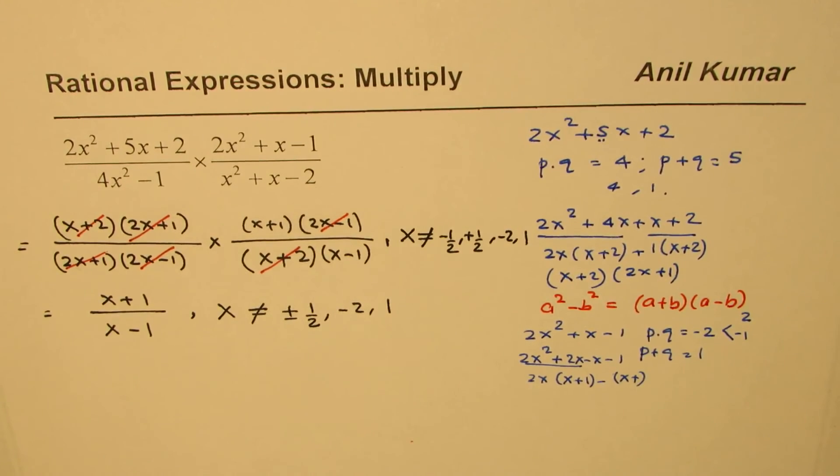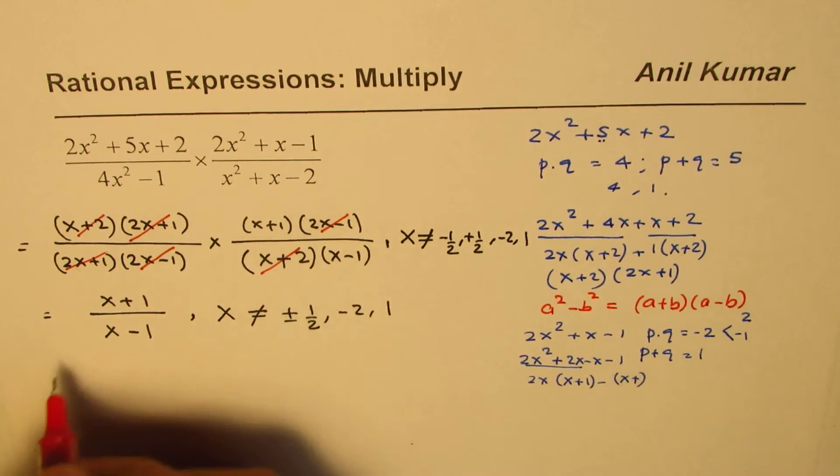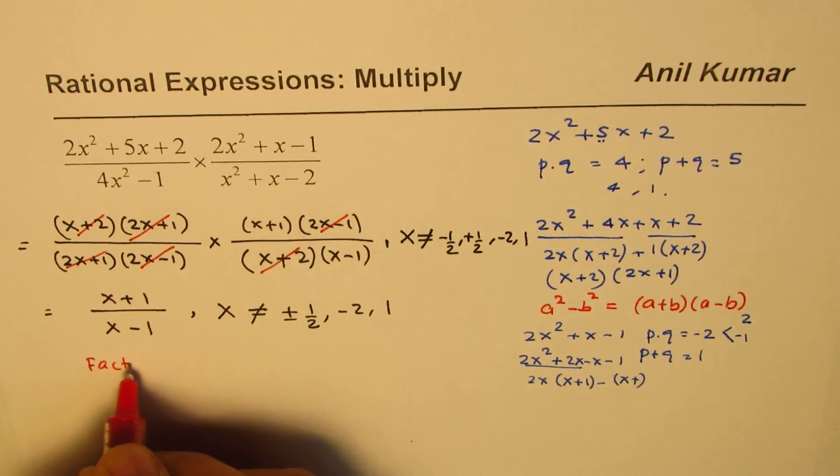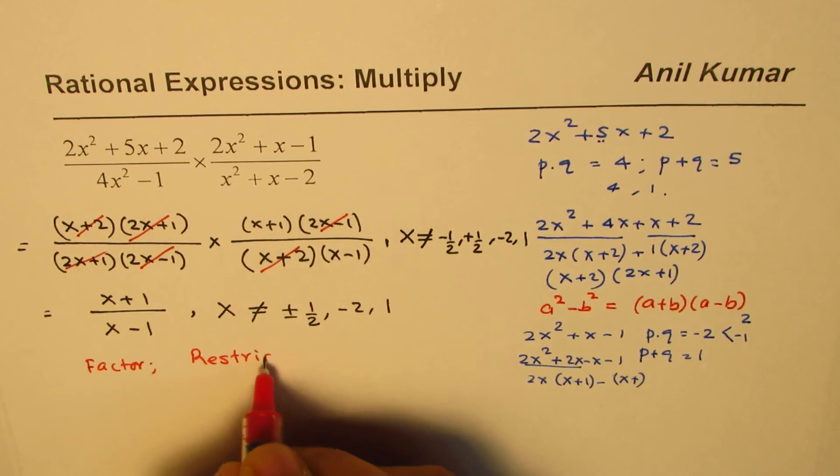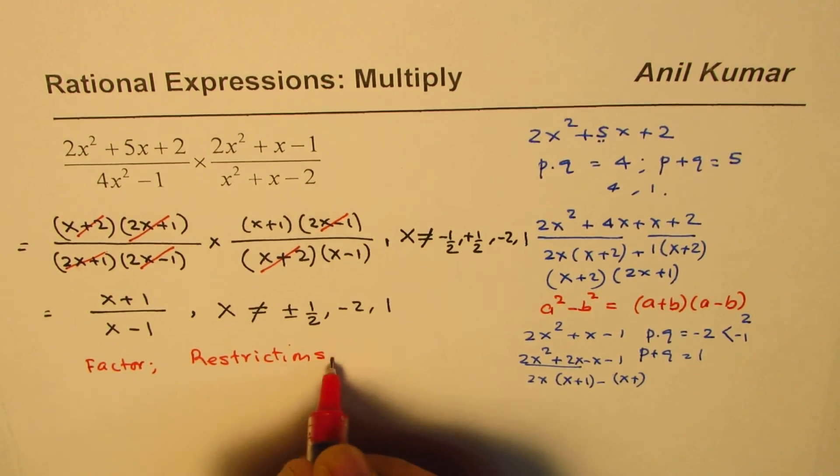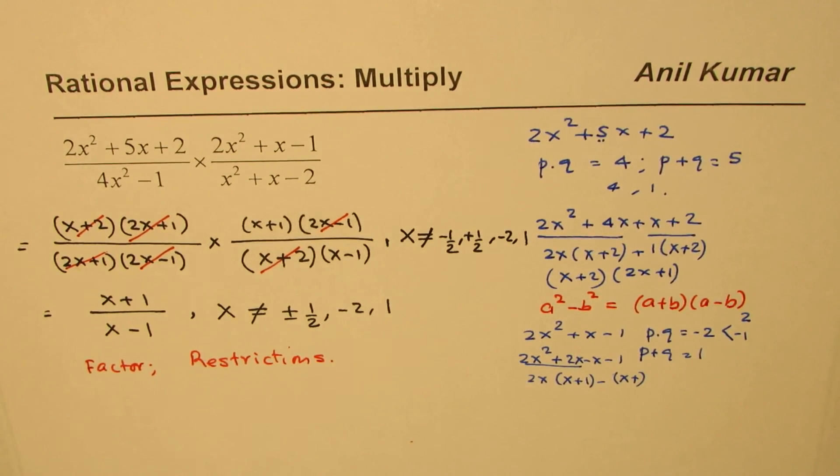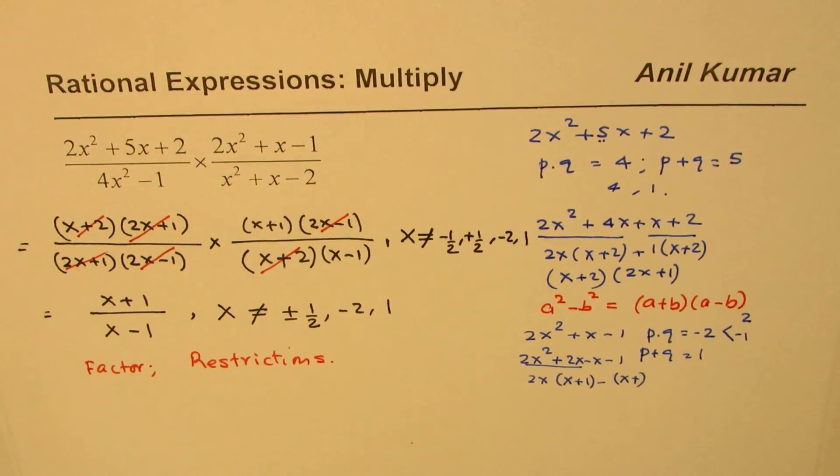So, it has four restrictions. I'm Anil Kumar, and I hope these steps help you to understand how to multiply rational expressions. So, basically, what you need to remember is, first factor, and then restrict. So, that means include restrictions in your solution. I hope that should help. I'm Anil Kumar, you can always share and subscribe my videos. Thank you, and all the best.